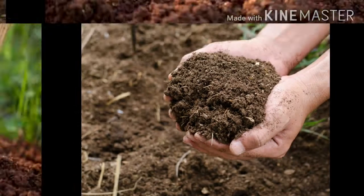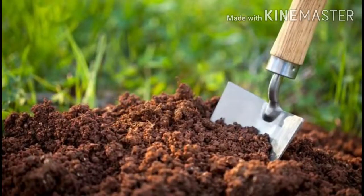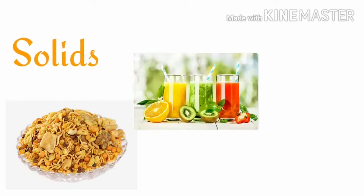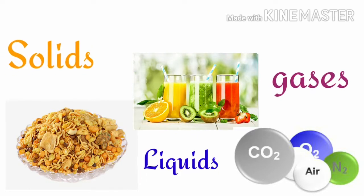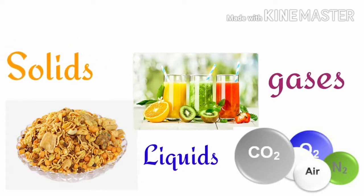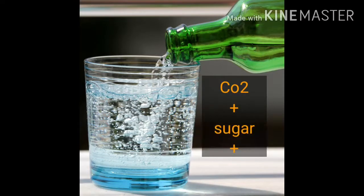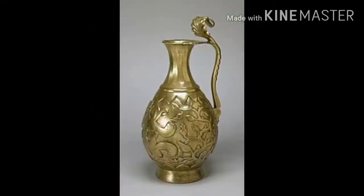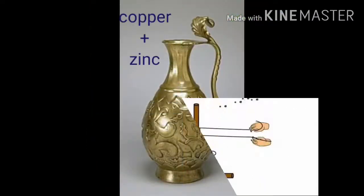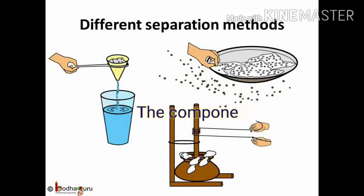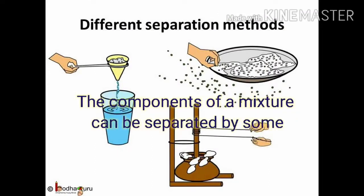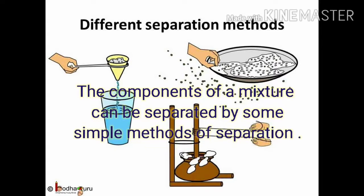Soil is a mixture of water, organic matter, broken rocks, and minerals. Mixtures can be solids, liquids, or gases. They can even be combinations of these. For example, the air we breathe is a mixture of gases. Soda water is a mixture of CO2 gas, sugar, and water. Brass is a mixture of copper and zinc. The components of a mixture can be easily separated by some simple methods of separation.